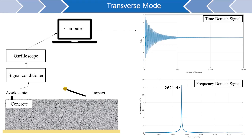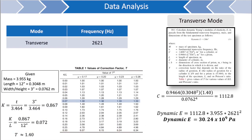The saved signal data can be processed and analyzed in MATLAB for several applications. In this case, the time domain signal and frequency domain signal were plotted to verify the results shown in the LabVIEW program. The peak frequency found from exciting the transverse mode can then be used to calculate the dynamic modulus of elasticity of the specimen. The dynamic modulus of elasticity is related to the mass of the specimen, the fundamental transverse frequency, and a factor labeled C that accounts for specimen dimensions. The calculated dynamic modulus of elasticity was found to be 30.24 GPa.